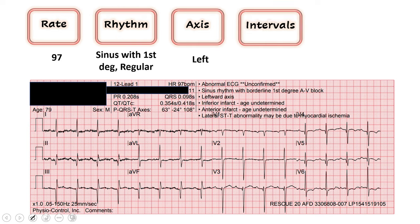As we move on to look at our intervals, the two most important ones are our QRS — we want that to be less than 120, it's at 98, we're good to go there — and then our QTc, which we find right here. It's 418, that's less than 450. We're good to go on our intervals.